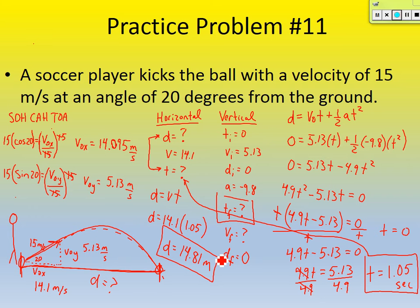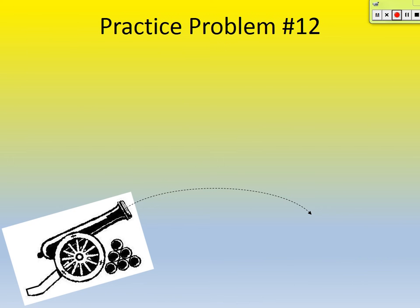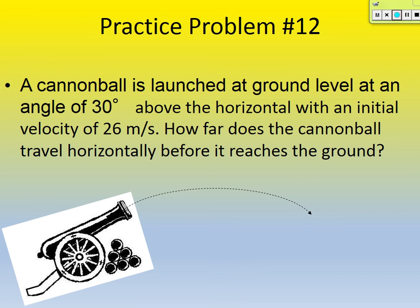So the ball didn't travel all that far — 14.81 meters — but it really wasn't going that fast at 15 meters per second for that angle. Now practice problem number 12. A cannonball is launched at ground level at an angle of 30 degrees above the horizontal with an initial velocity of 26 meters per second. How far does the cannonball travel horizontally before it reaches the ground? Draw a picture, find your initial velocity in the x and y, break its motion up, and list all the variables.